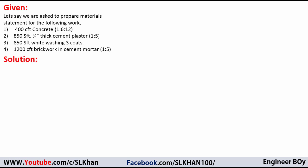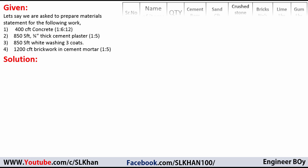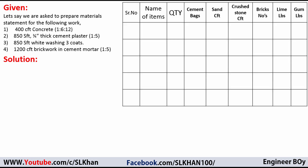In the solution, as I defined, a material statement is a table in which we label all the material quantities. As you can see, in the first column we have the serial number — 1, 2, 3, and so on.